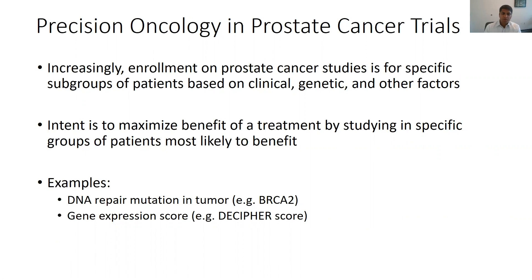Some of the notable examples of precision oncology trials that we've seen in prostate cancer over the last few years include trials of PARP inhibitors in prostate cancer patients with mutations in the DNA repair pathway genes such as BRCA2, as well as the use of the Decipher score in localized prostate cancer to decide potentially who should get hormone therapy in combination with radiation.